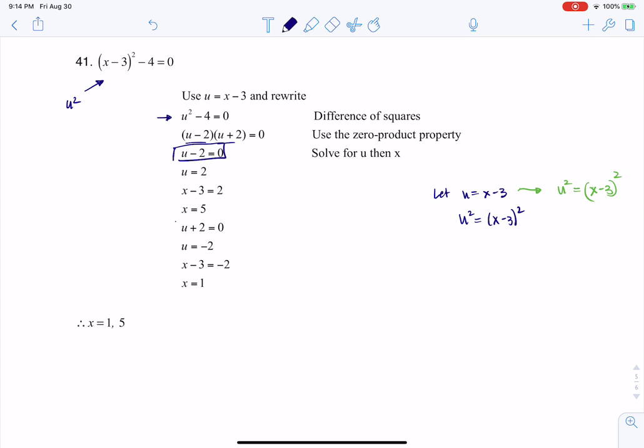So I set my two terms equal to 0 using the 0 product property. And let me just write that over here, because maybe it's easier to see horizontally rather than vertically. So I'm getting u is equal to 2, or u is equal to negative 2, and that's great